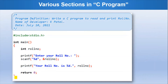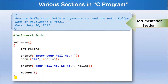The first three lines in this code are written under comments, and this is the documentation section where we write program-related information like program definition, name of developer, date of development, etc.